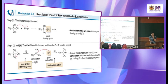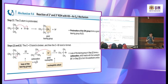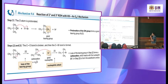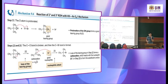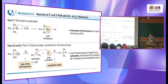For tertiary alcohol, it follows the SN1 mechanism — still a substitution reaction but involving only one molecule in the rate-determining step. The first step is the same: OH attacks the hydrogen forming a water leaving group. But instead of bromide attacking immediately, the water leaves first to form a carbocation.